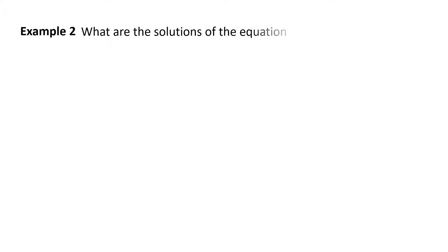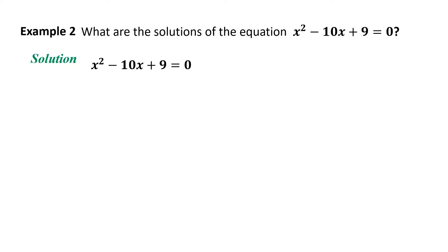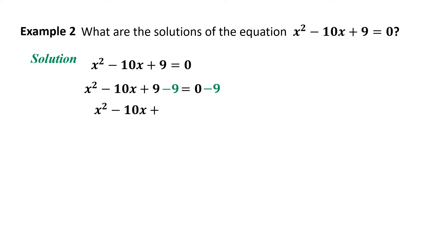Example 2: What are the solutions of x² - 10x + 9 = 0? Solution: Rewrite the equation x² - 10x + 9 = 0. Since the numerical coefficient of the first term is 1, no need to simplify. Proceed to transpose +9 to the other side using the addition property of equality, adding its inverse -9 to both sides. The equation becomes x² - 10x = -9.